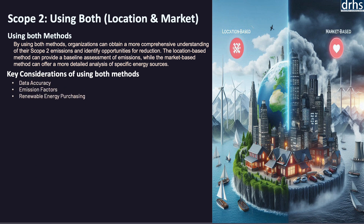Key considerations when using both methods include: data accuracy — accurate electricity consumption data is critical and often obtained from utility bills, metering systems, or energy management systems; emission factors — national or regional grid emission factors are used for the location-based method, while for the market-based method, emission factors vary based on specific contracts or certificates; and renewable energy purchasing — if a company purchases a Renewable Energy Certificate (REC) or similar instrument, this should be considered in the market-based method to potentially reduce reported scope 2 emissions.